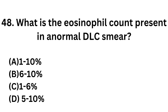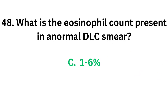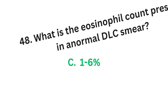Question number 48: What is the eosinophil count present in a normal DC smear? Option A: 1-10%. Option B: 6-10%. Option C: 1-6%. Option D: 5-10%. The correct answer is option C, 1-6%. 1-6% eosinophils can be found in a normal differential count smear.